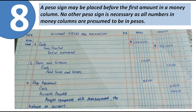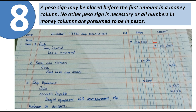A peso sign may be placed before the first amount in a money column. The first entry in the debit column and the first entry in the credit column get a peso sign. Subsequent amounts do not need a peso sign, as it is already understood. For every new page, place a peso sign only on the first entry of the debit and credit columns.